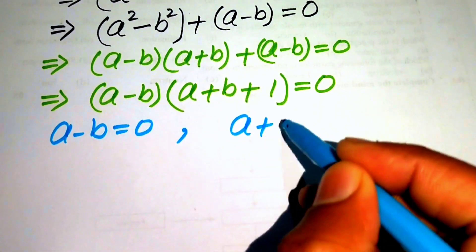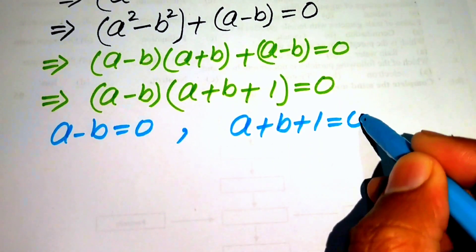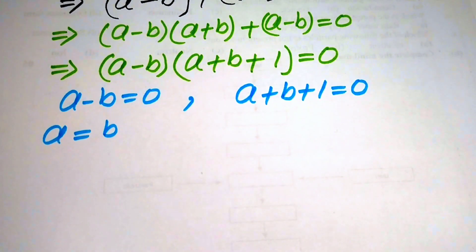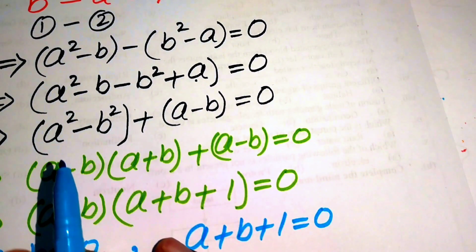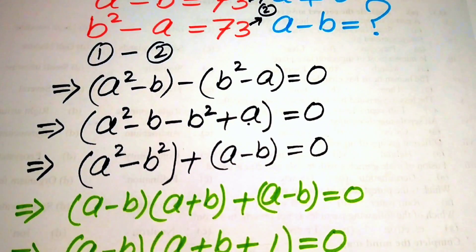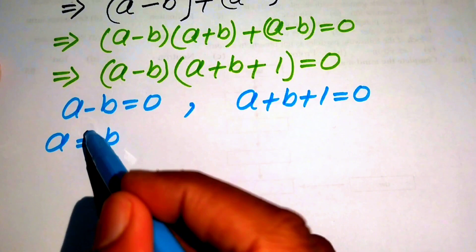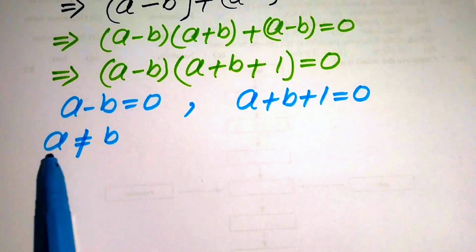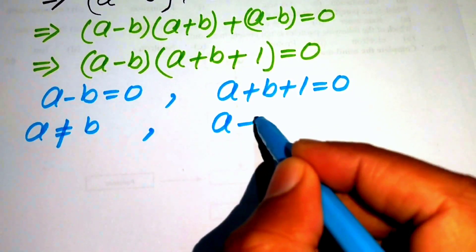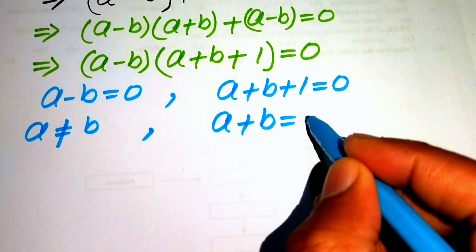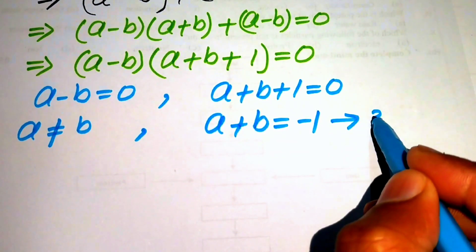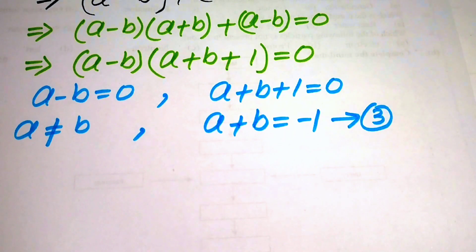This gives us two cases. Case one: a minus b equals zero, meaning a equals b. But we were given that a is not equal to b, so we reject this case. Case two: a plus b plus 1 equals zero. Moving the 1 to the right-hand side gives us a plus b equals minus one. We call this equation number three.